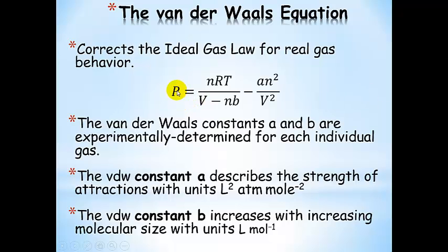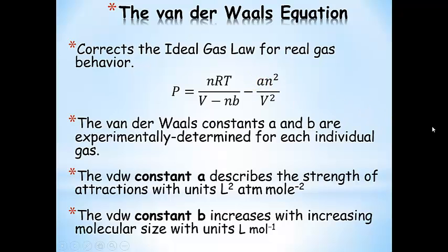Solving for pressure, the Van der Waals equation is: P = nRT / (V - nB) - a·n² / V². The Van der Waals equation uses two constants, A and B, that are experimentally determined for each individual gas — for example, water vapor, sulfur trioxide, oxygen, and nitrogen each have their own Van der Waals constants A and B.